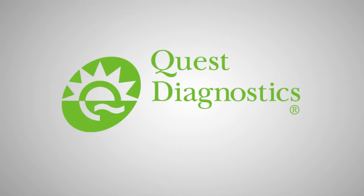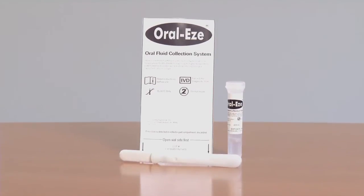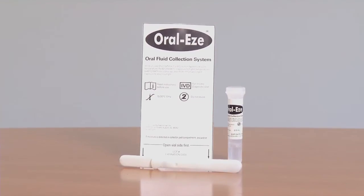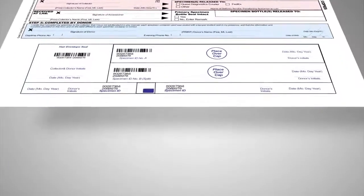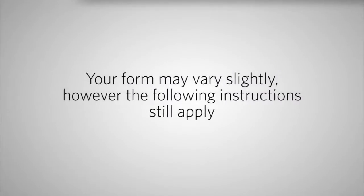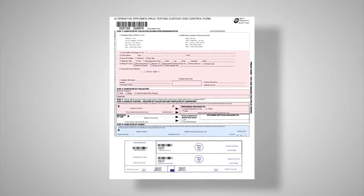In order to have a successful experience when collecting an oral fluid drug test sample, two separate events must take place simultaneously. The first is the collection of the sample using the Oral Ease Collection device. The second is completion of the Oral Fluid Custody and Control form, which ensures the legal integrity and validity of the collected sample. In this lesson, you will learn the necessary procedures to properly complete a Quest Diagnostics Oral Fluid Drug Testing Custody and Control form.